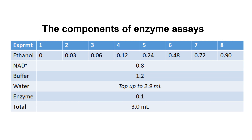From tube two to tube eight you have an increasing amount of ethanol. So we can predict that with increased substrate concentration, you will see a higher absorbance reading later on with the experiment.